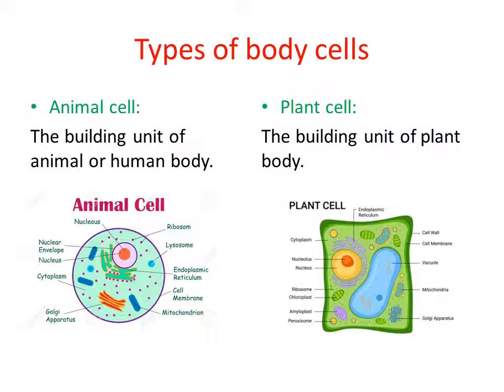We have two types of cells. The cell which builds the human body or the animal body is called the animal cell. As shown in the figure, it consists of four main components. The first is the plasma membrane, which is the outer layer of the cell, and it controls the substances that enter or leave the cell.